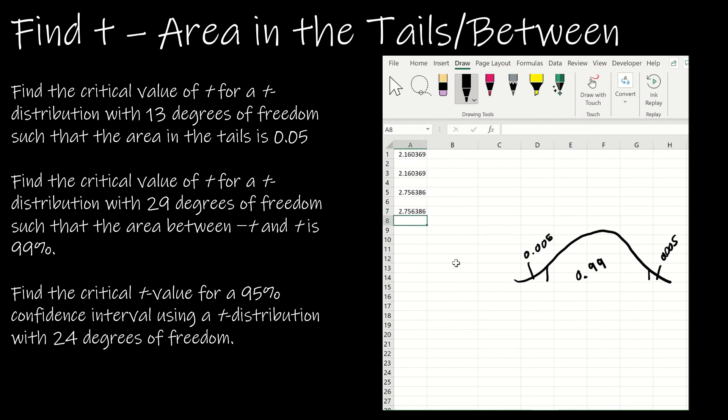What would happen if instead I did t inverse 2 tail and I did 0.99 instead of subtracting it from 1, comma 29? Not what you want to do. Remember, we're not looking for the probability in the middle; we're looking for the probability in the tails.